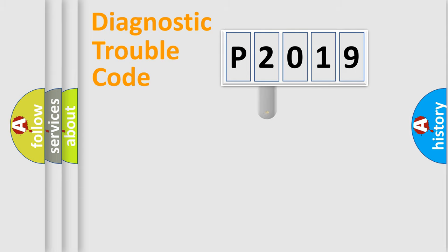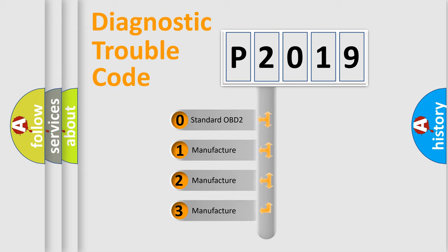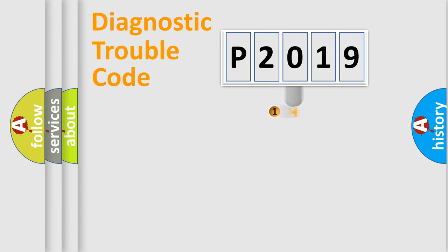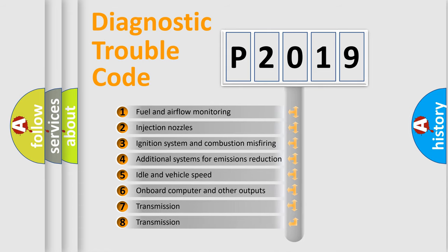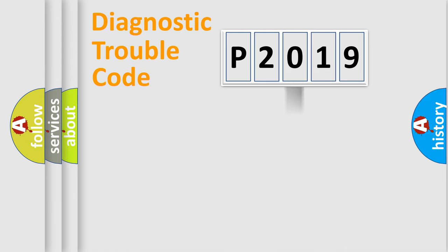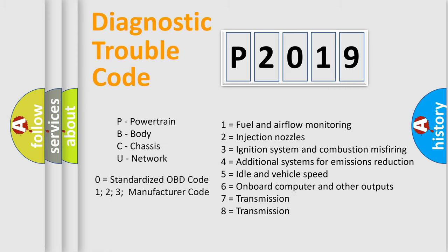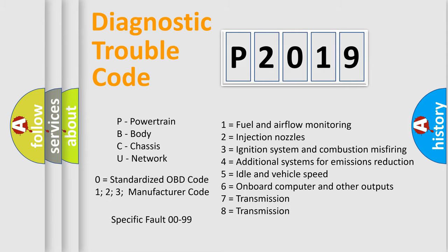This distribution is defined in the first character of the code. If the second character is expressed as zero, it is a standardized error. In the case of numbers 1, 2, or 3, it is a manufacturer-specific error. The third character specifies a subset of errors. The distribution shown is valid only for the standardized DTC code. Only the last two characters define the specific fault of the group. Note that such a division is valid only if the second character is expressed by the number zero.